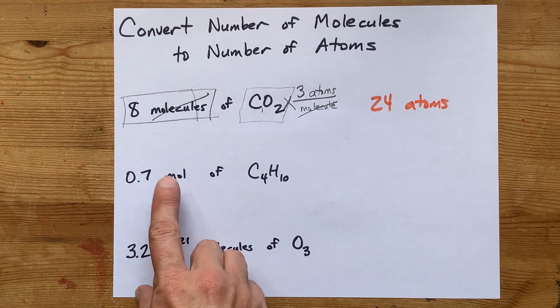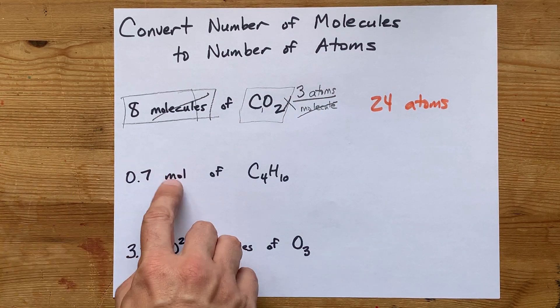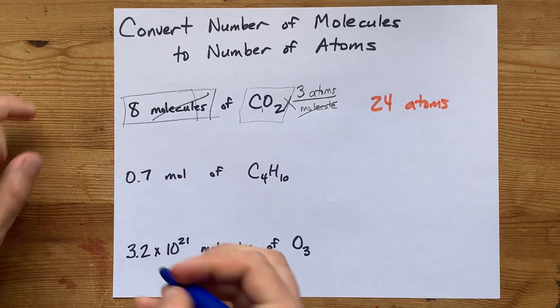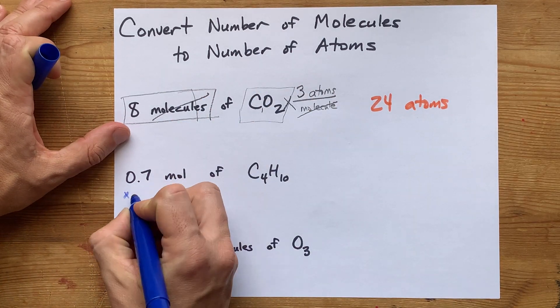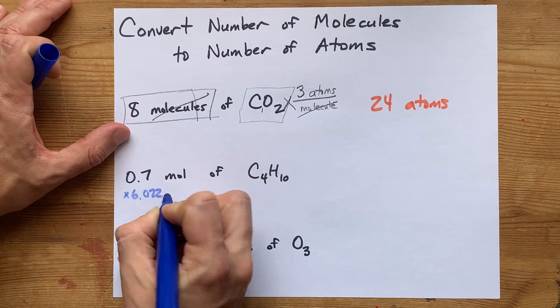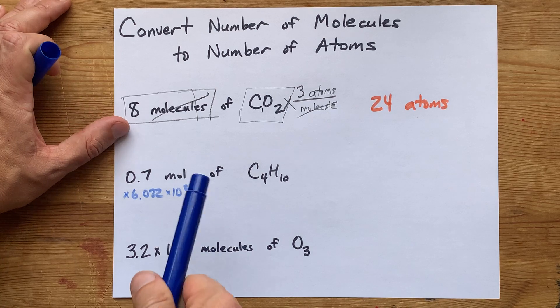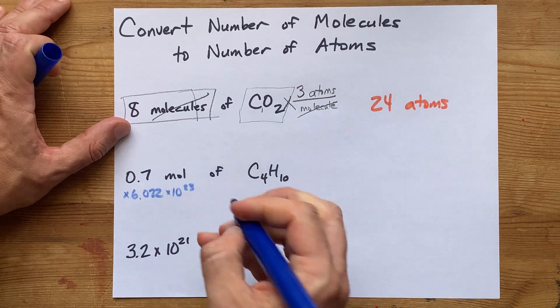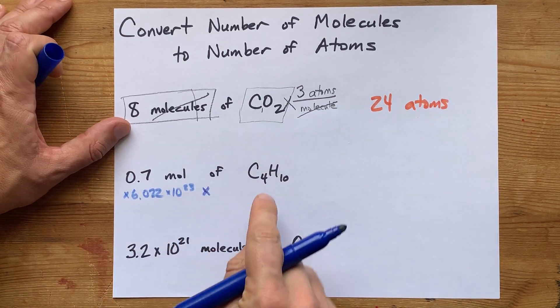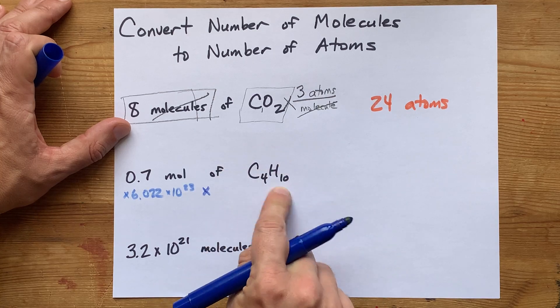Now, this one is moles, so you'll have to convert that one to molecules yourself. The way that works is to multiply it by 6.022 times 10 to the power of 23. That's Avogadro's number. That's now in molecules. And then you multiply it by however many atoms are in the molecule itself.